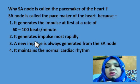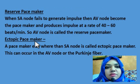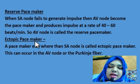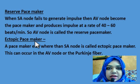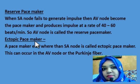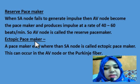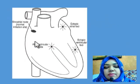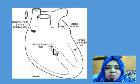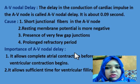The reserve pacemaker: when the SA node fails to generate impulses, the AV node becomes the pacemaker and produces impulses at a rate of 40 to 60 beats per minute — hence it is called the reserve pacemaker. An ectopic pacemaker is any site other than the SA node that generates impulses; this can occur in the AV node, the ventricular foci, or the Purkinje fibers, as shown in the figure.